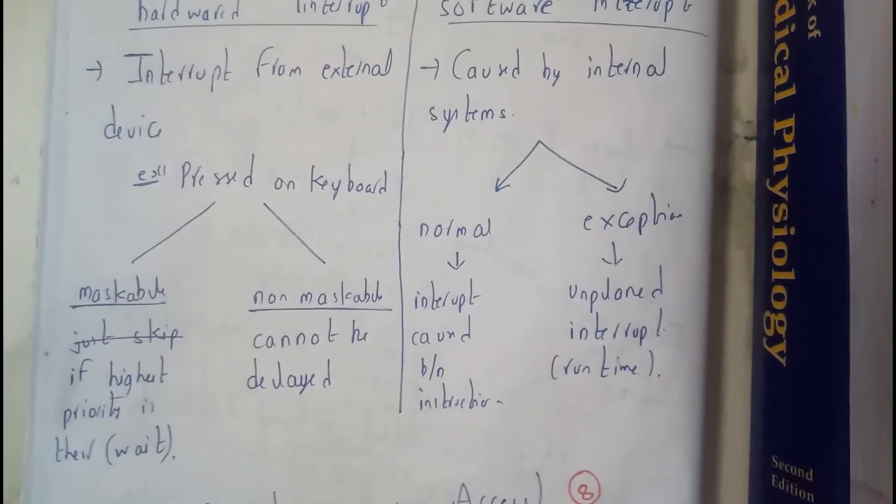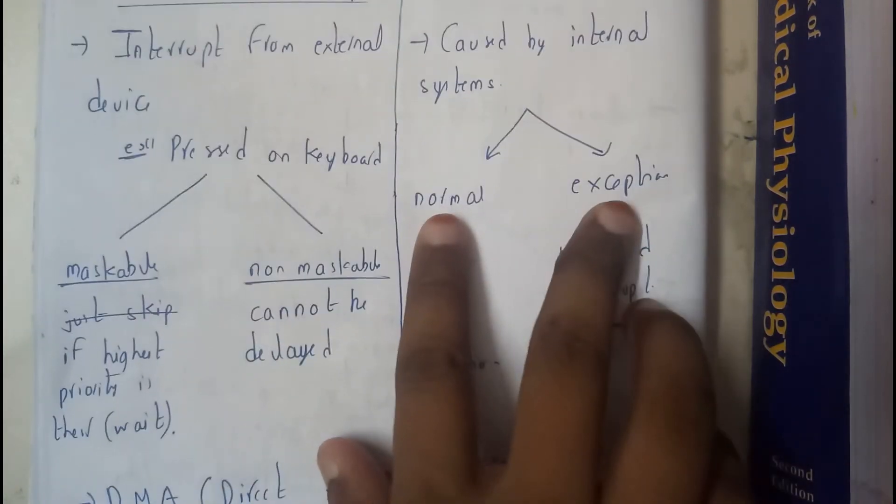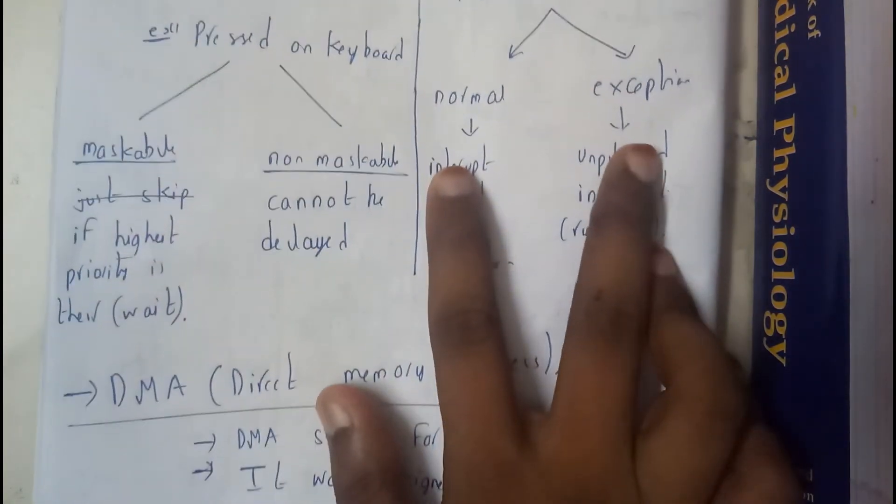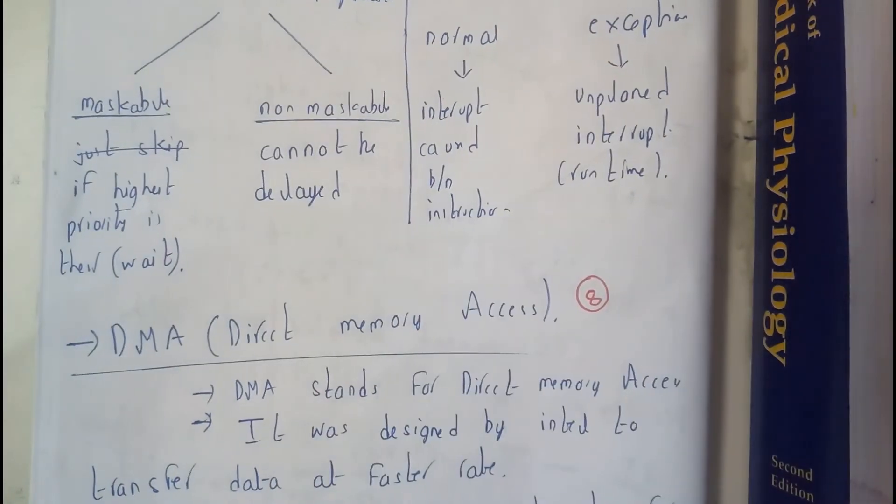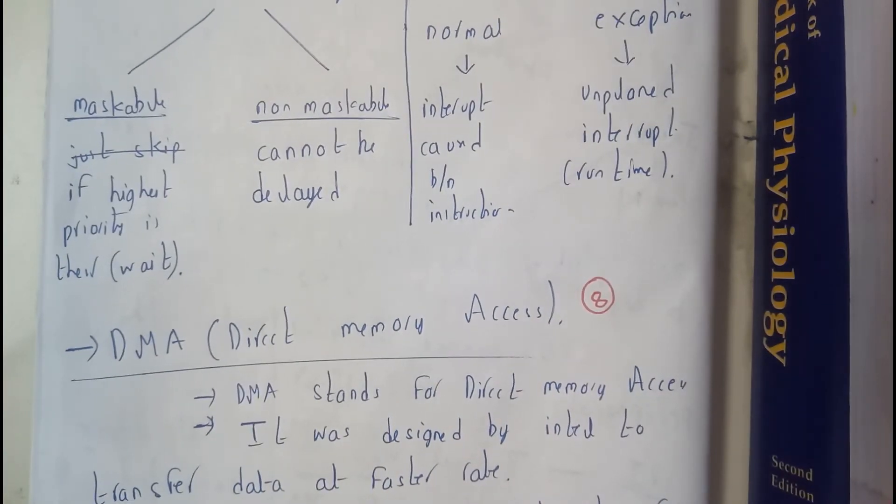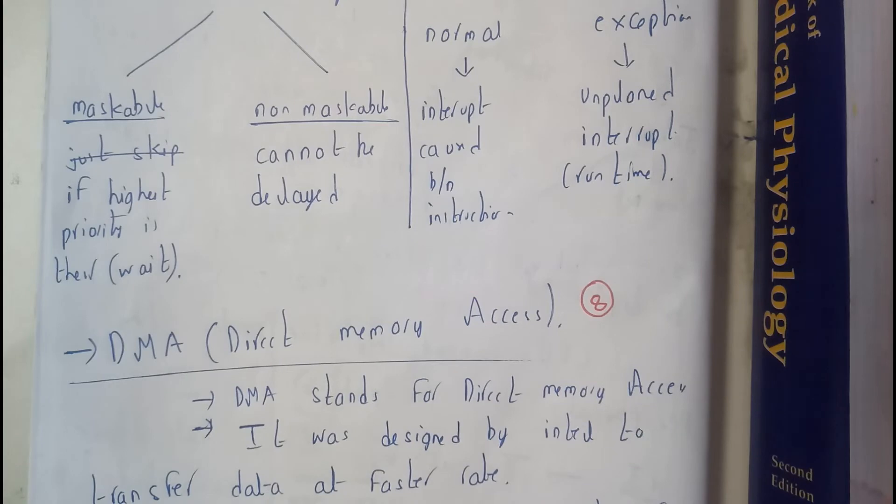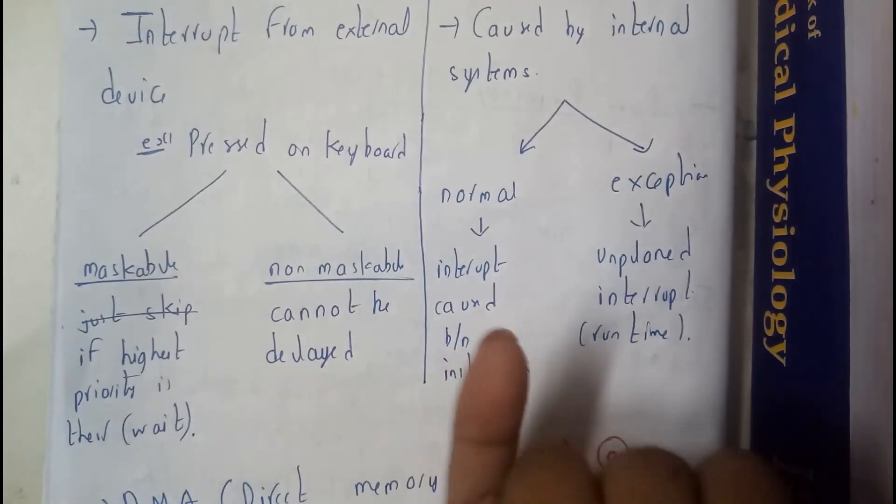Now I hope everyone got a small idea. Further moving on to software interrupts - they are further divided to normal and exceptional. Normal is nothing but interrupt caused by the instructions of certain instructions. The other case, exception, is applied when interrupted at runtime. Now I hope everyone got a small idea on interrupts and priority interrupts.